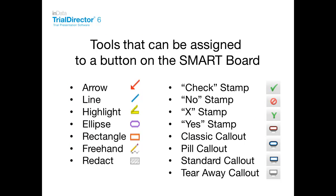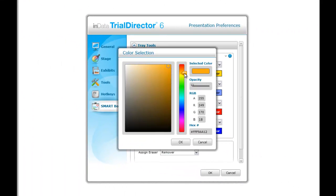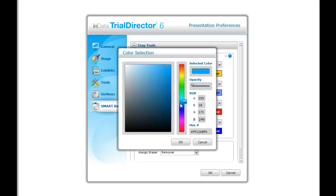The list of Trial Director tools that can be assigned to a button on the Smart Board are listed here. The color palette selector can be used to assign a spectrum of color choices to those tools that have color capabilities.